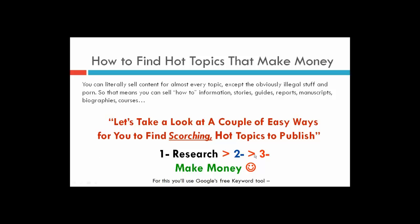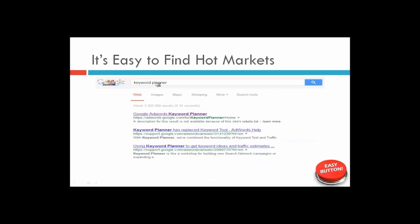Let's take a look at a couple of easy ways that we can find these hot topics to publish. We need to use a tool from Google called the Google Keyword Planner. Go over to Google, type it in, and it'll be the top result — Google AdWords Keyword Planner. You will have to sign up for a Google AdWords account, but don't worry — it's totally free. Everything I'm showing you here is free. We're not spending money on ads; we just want to use the Keyword Tool that is in AdWords.